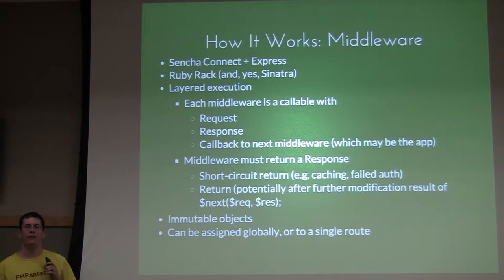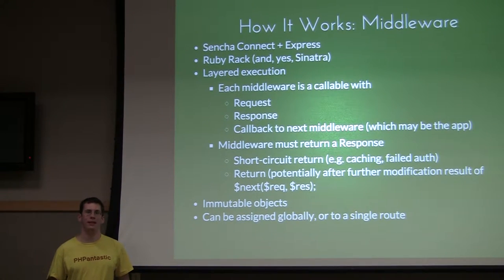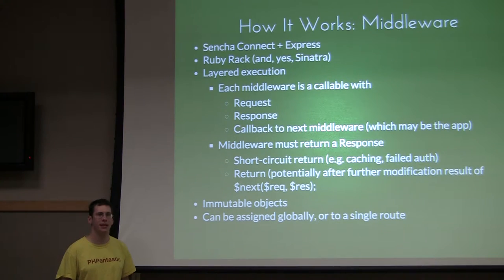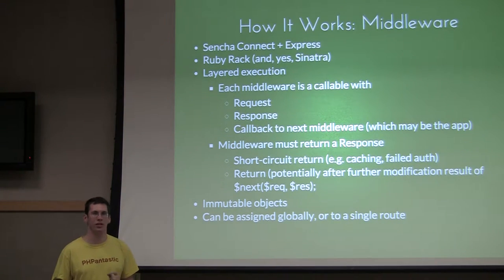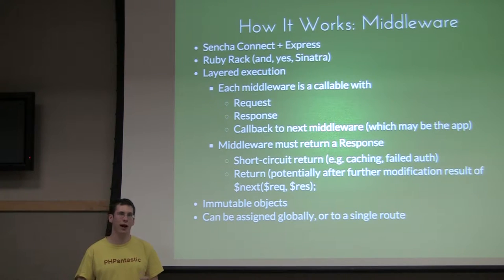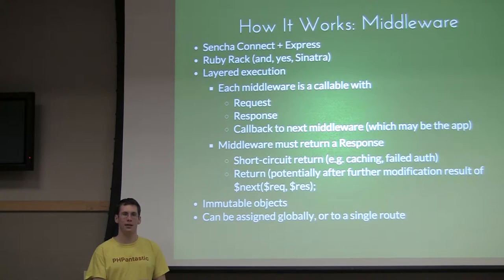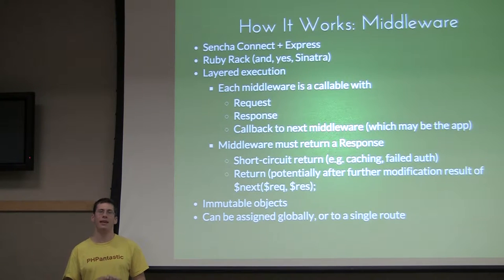So, there are a few core concepts in SLIM: routing, dependency injection, and the one we're going to talk about first — middleware. This is why you have your request and response as parameters for those closures. When you're dispatching a route, you say: I take this route, I have this callable, which will always take a request, a response, and if you have route parameters, it will take an array of arguments that the router will pull out of your route — for example, a name parameter.